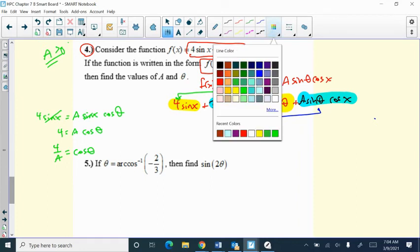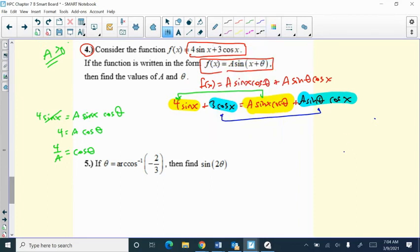And I should have mentioned it in the problem, I think I forgot to write this, that we know that a is strictly positive. So four over a is equal to cosine of theta. Now let's go ahead and do the same thing for this equation. We know that three cosine of x must equal a sine theta cosine of x. And again, since they're both cosine x here, that's the unifying factor, we can rewrite that to say, well, three is equal to a sine of theta. Divide that over. So sine of theta equals three over a. So now we have two pieces of information about our theta. We know the cosine of theta is four over a, and the sine of theta is three over a.